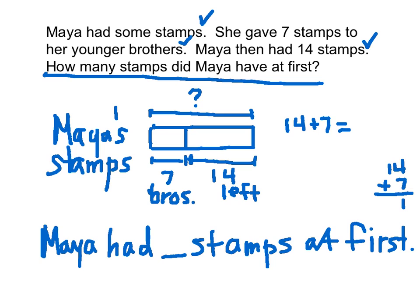We have 4 plus 7 is 11. 11 is 1 ten and 1. Then we add up our tens: 1 plus 1, 2 tens is 20. We get our answer of 21. So that means once we get 21, we place that right back into our model and we check. Does 7 and 14 make 21? 7 plus 4 is 11, plus 10 is 21. Yes, it does.